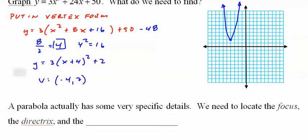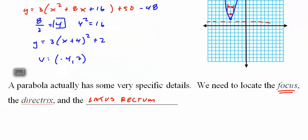And now we talk about other things that are on there. It has a focus. Focus goes right here-ish, depending. It has a directrix. Directrix is a line that goes right here. And it has a latus rectum, which is the width of the parabola right across the focus. So this distance from here to here.